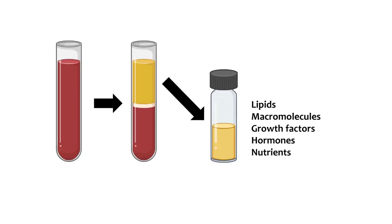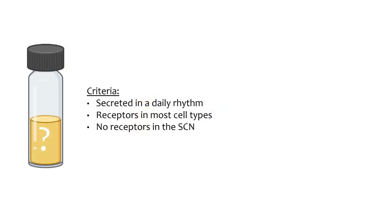As we mentioned, serum contains a wide range of components, many of which are unknown. To find a single component of serum that can reset peripheral rhythms, researchers searched for a candidate that is secreted with a daily rhythm and has receptors in most peripheral cell types.